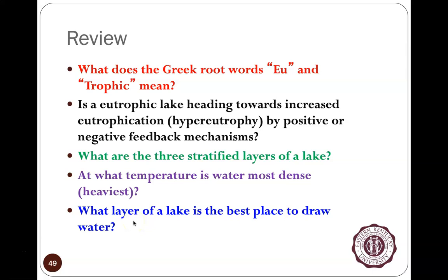If we were a water plant drawing water from a lake for treatment, where would we draw from ideally? From a eutrophic or mesotrophic lake, we wouldn't draw from the top — we'd be pulling in algae and scum. We also don't want to draw right from the bottom because of sediments. So we want to draw from that upper layer of the hypolimnion — that's the preferred area.